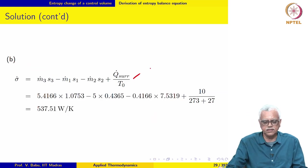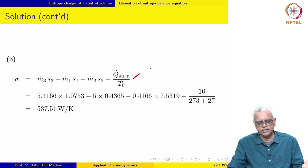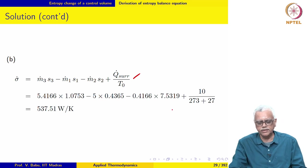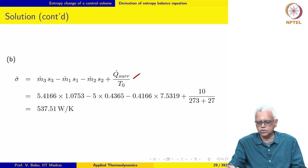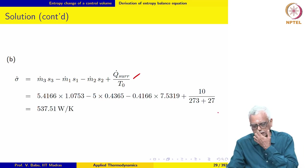We apply the steady flow entropy balance equation. Setting dS_cv/dt equal to zero, we end up with the Q dot surroundings term. Remember, heat is lost to the surroundings, so this is plus 10 for the surroundings.